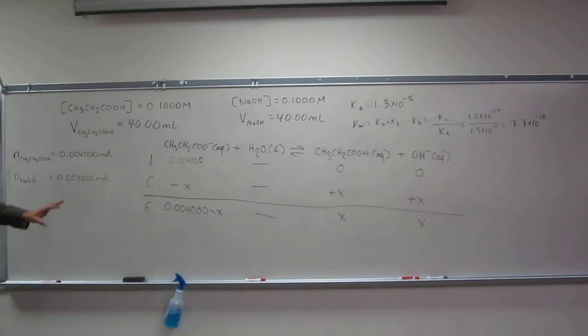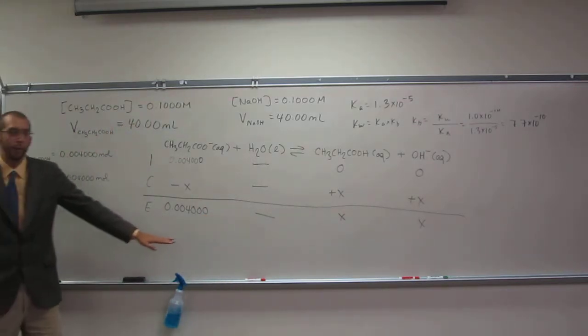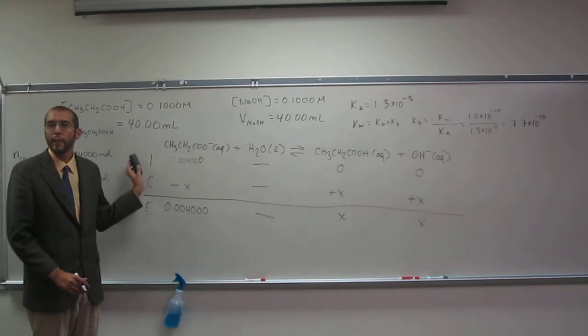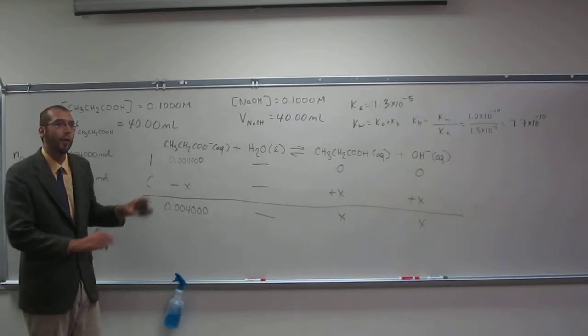Remember, Kw equals Ka times KB. So KB equals Kw over Ka. So 1.0 times 10 to the negative 14 divided by 1.3 times 10 to the negative 5 equals 7.7 times 10 to the negative 10. That is KB. So that is very small, right? So we can do this approximation. Is everybody okay with us doing that? Wiping that thing off? Okay. So can I erase the ICE table except for equilibrium concentrations now?